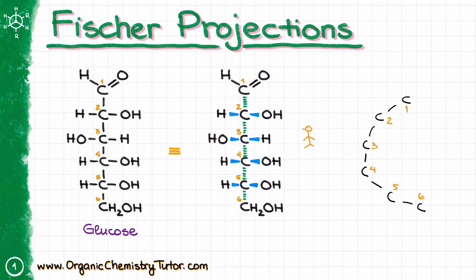Carbon number one is just a carbonyl, so I'm going to show that C=O double bond and a hydrogen for my aldehyde functional group and move on to carbon number two. On carbon number two, I have the OH group that is physically closer to my observer, which means that the OH is going to be sitting on the wedge, and the hydrogen, which is looking away from me, is going to be sitting on the dash.